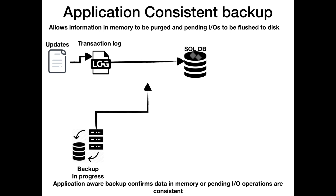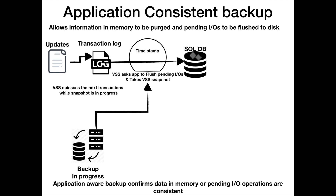When planning a backup strategy, we have to be conscious that transactions should not be incomplete. VSS comes again to the rescue and becomes application-aware VSS. It could be Microsoft VSS, and in most cases it is the backup software provider's VSS. Volume Shadow Copy Service asks the application to flush the pending IOs so that it can take a VSS snapshot.